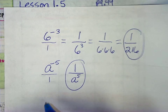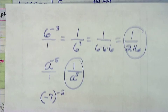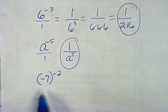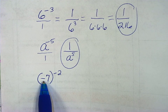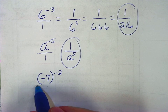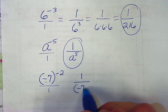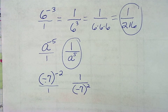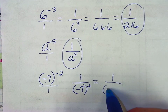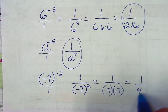What if our base is negative? What if we had negative 7 to the negative 2 power? Because the exponent is negative, I write the reciprocal: 1 over negative 7 squared, which equals 1 over negative 7 times negative 7, and that equals 1 over 49.